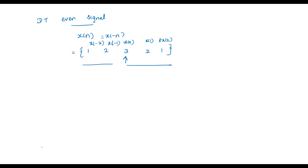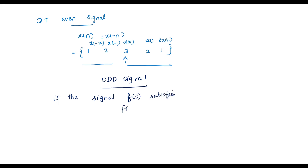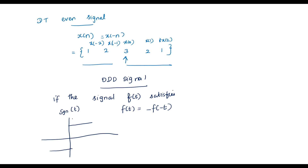Next, I am going to explain about the odd signal. What is odd signal? If the signal f of t satisfies f of t is equal to minus f of minus t, this is known as odd signal. The first example is the signum function. This is the signum function — signum of t — with value plus 1 and minus 1.